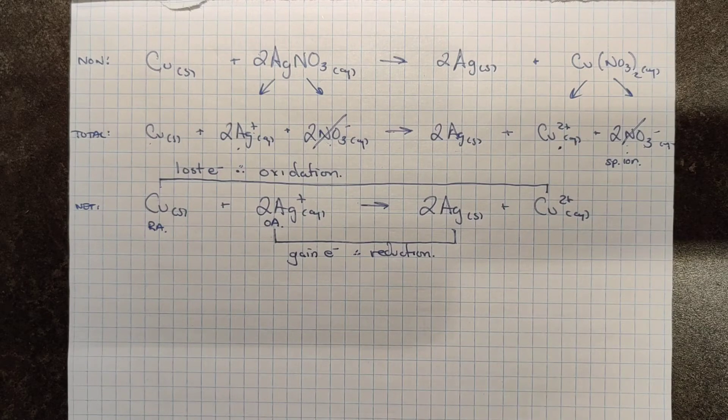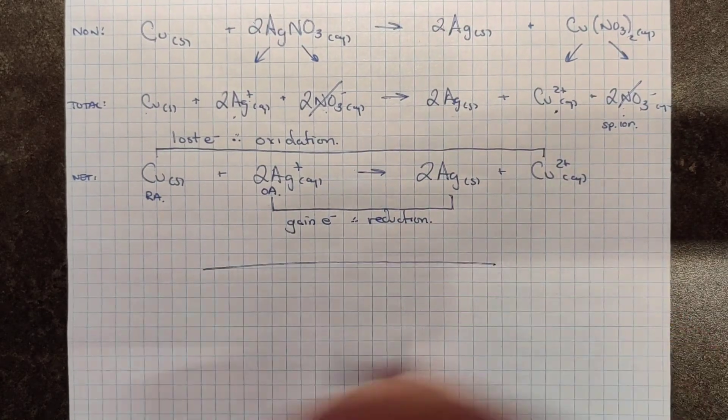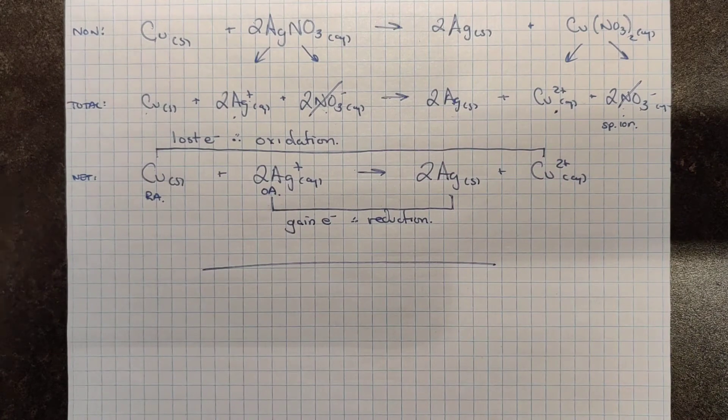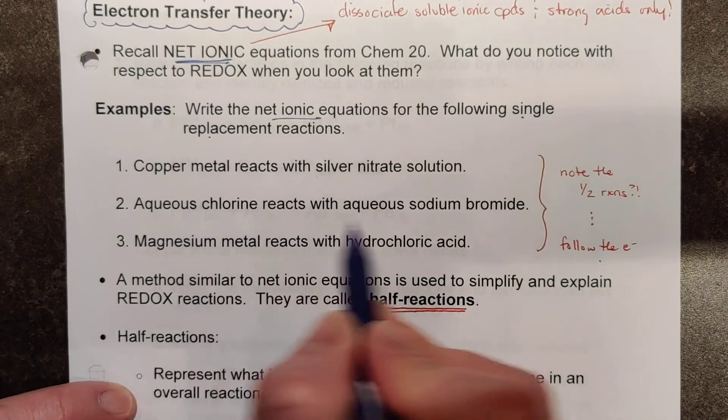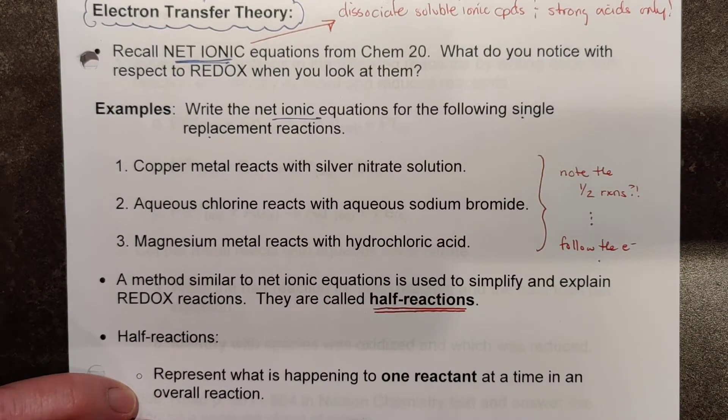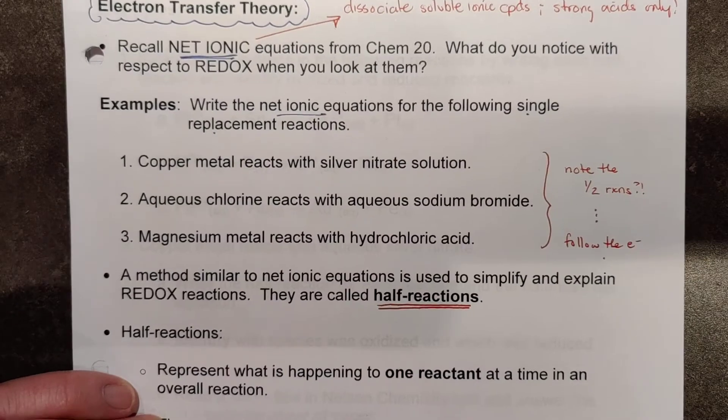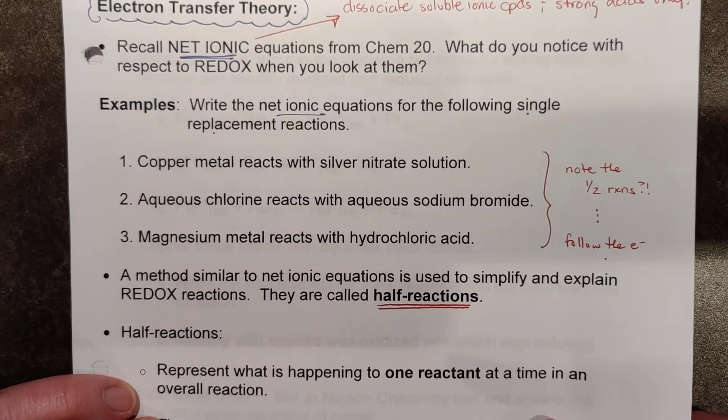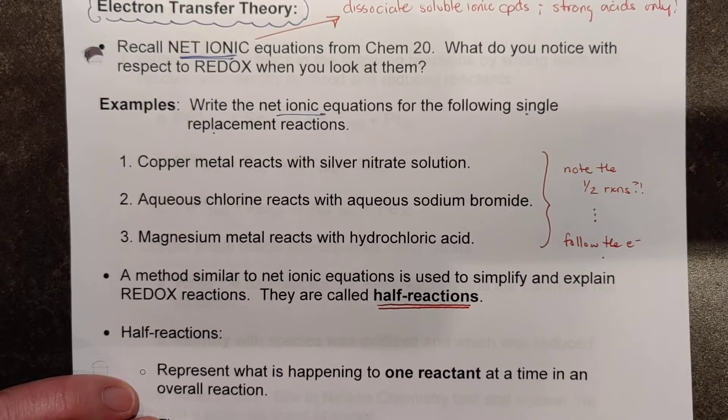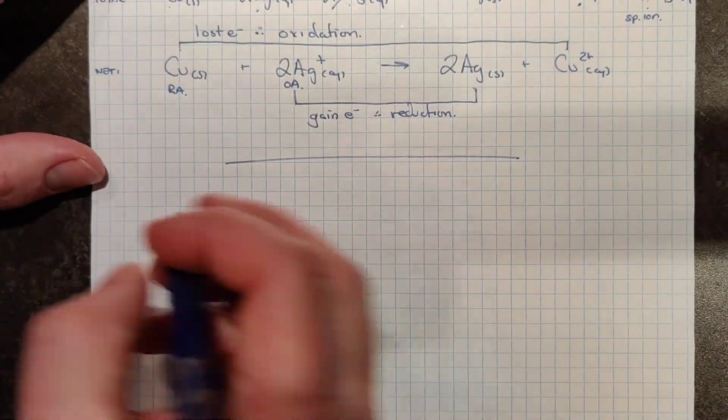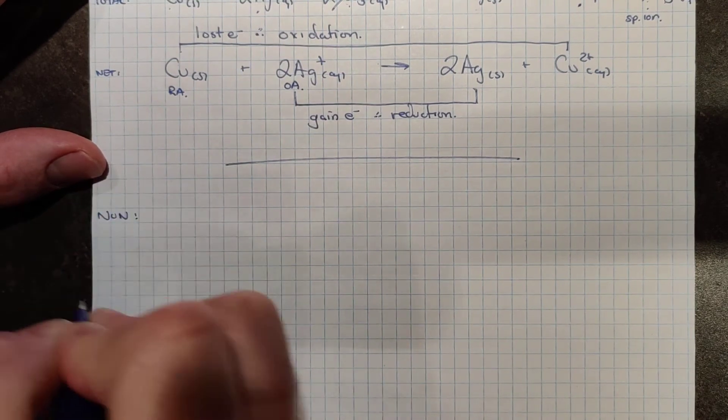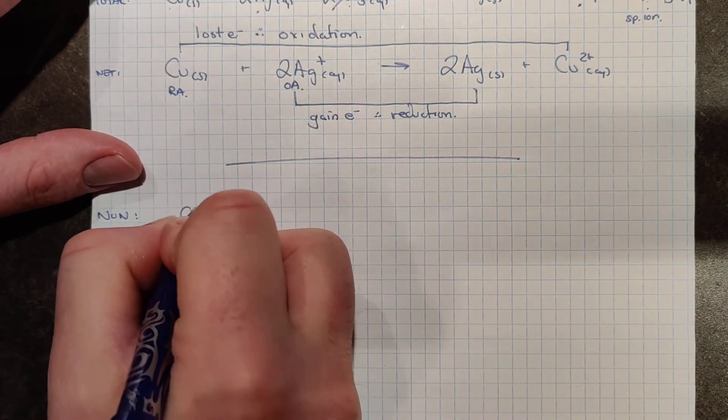What I'll have you guys do is try one more. In the next example, we have aqueous chlorine reacting with aqueous sodium bromide. I'll get you started on that one and then I want you to pause the video, go through the total ionic and then the net ionic and then see if you can identify which species gained electrons and which species lost. So kind of doing the process that we just did. But here let me help you out with the non-ionic equation for chlorine reacting with sodium bromide and then you guys can try that one on your own.